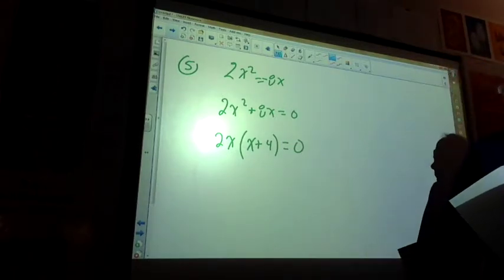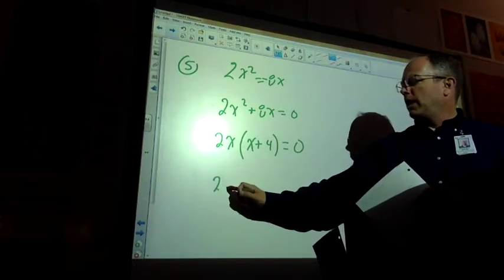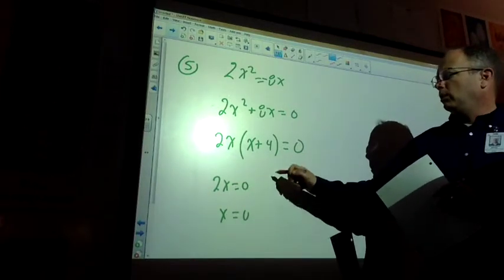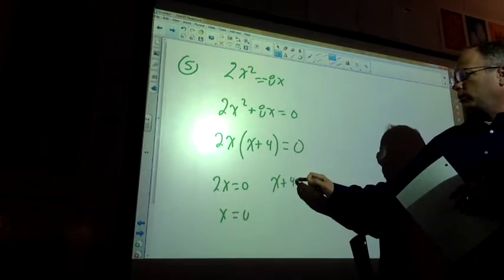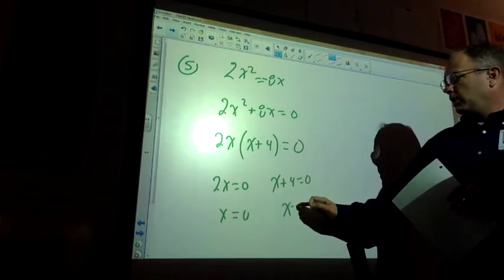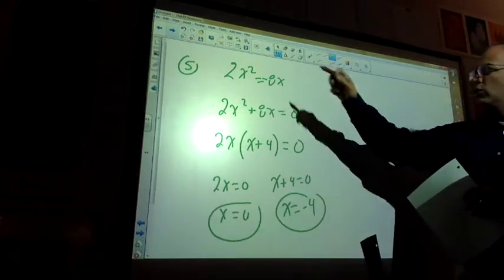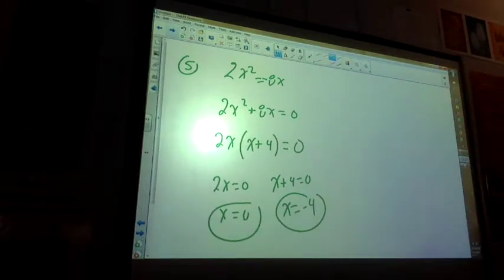Agreed? Yep. So that means that 2x equals zero. So what's x equal to here? Zero. Yeah, all you do is divide each side by two. And x plus four equals zero. X equals negative four. So there's my two solutions. So if I were to plug those solutions up into the very top, it's going to work. You plug zero in, you get two times zero squared. That's zero equals negative eight times zero. Zero equals zero. That's true. You plug negative four in, that's also going to work.